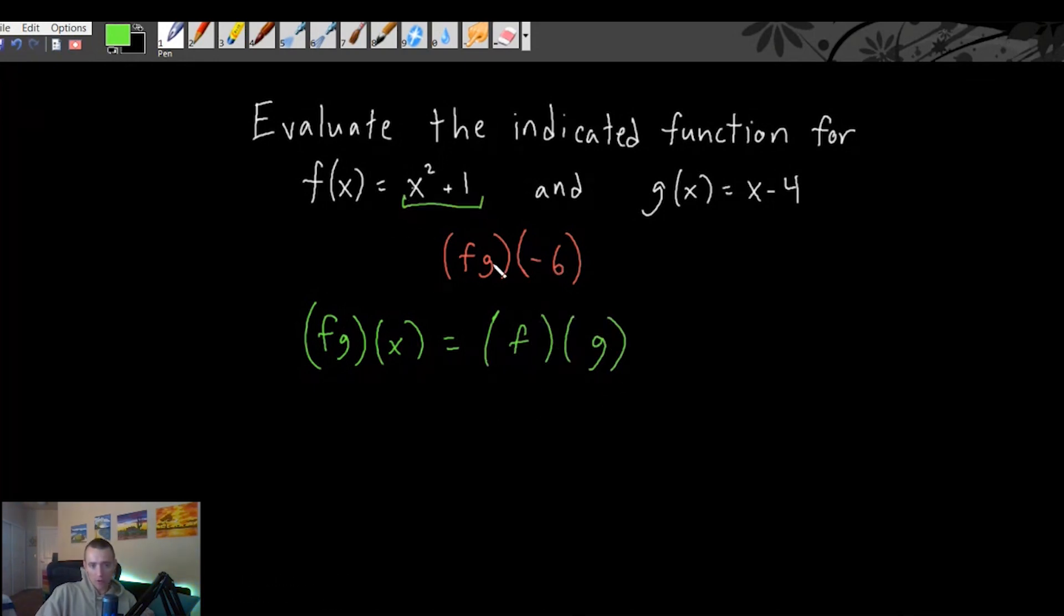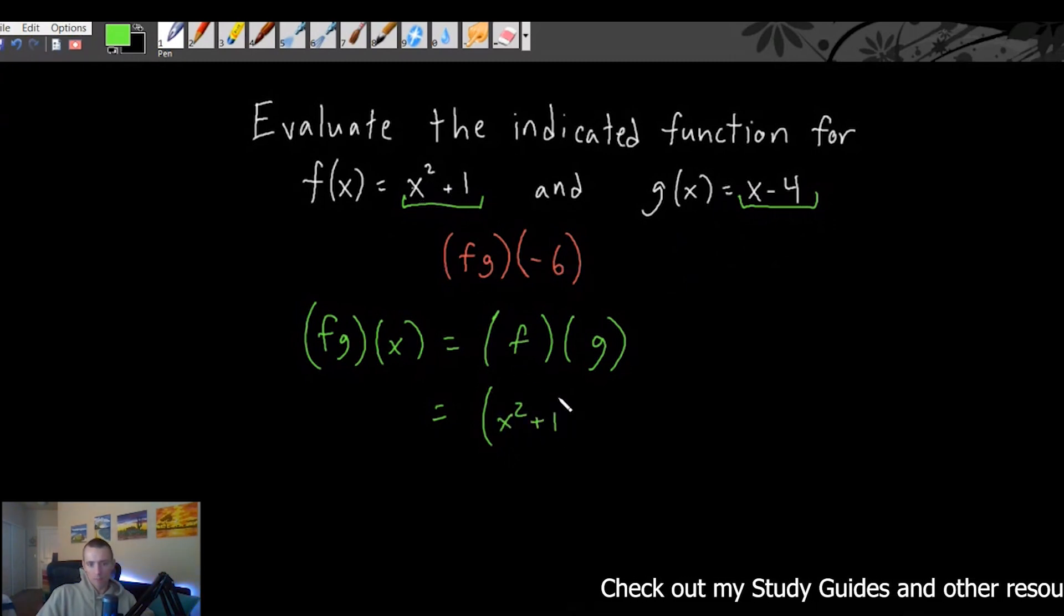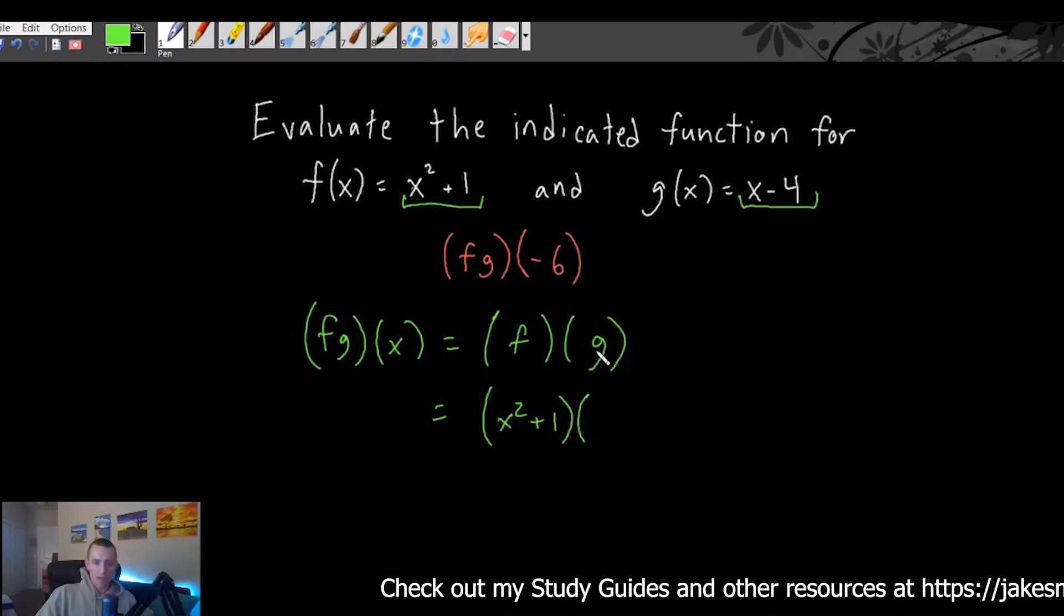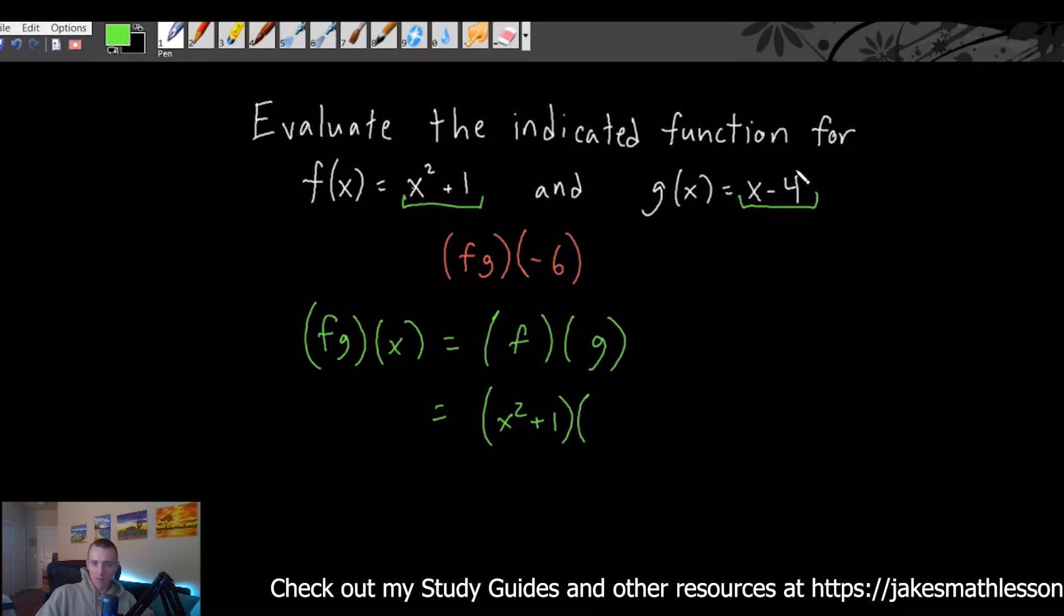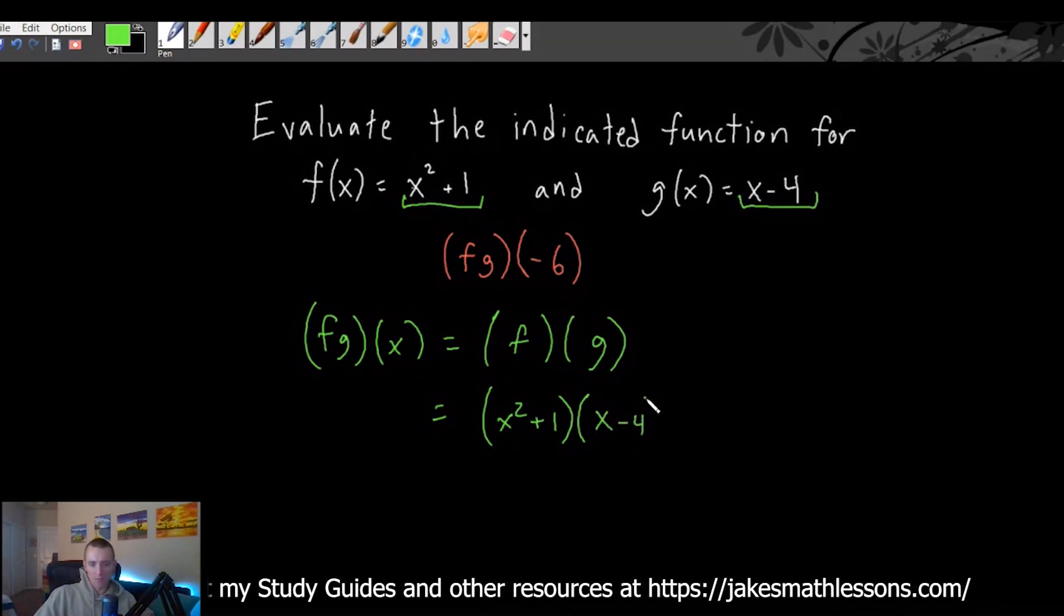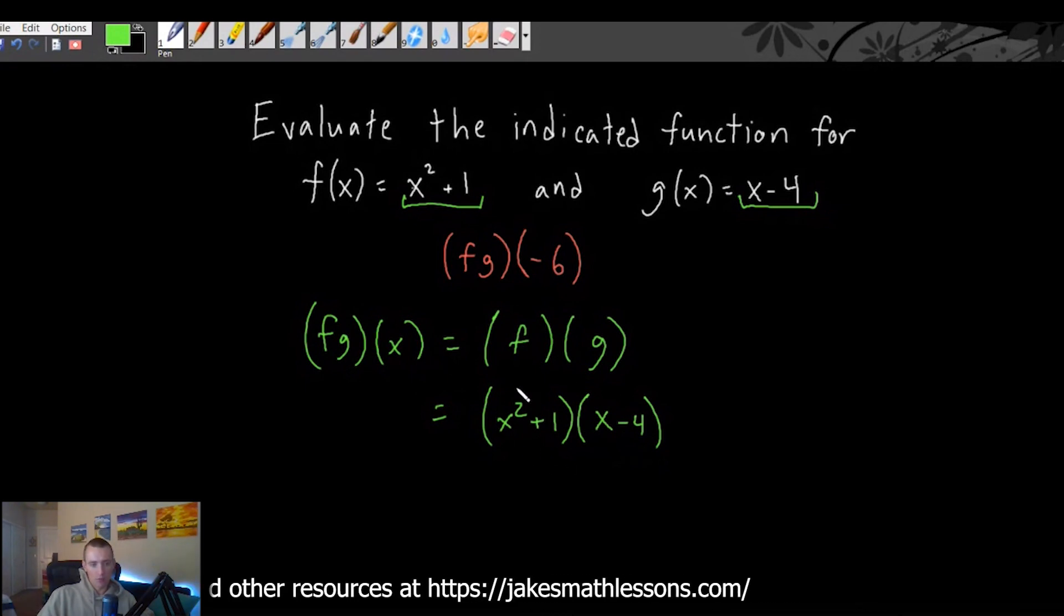So all we really should have to set up is f times g, which f is this whole part here, x squared plus 1, g is this whole part here, x minus 4. So we should be able to basically just say x squared plus 1 for f. Again, make sure that it goes in parentheses like this. And then times g is going to be times x minus 4 in parentheses. So f times g of x would be written like this, x squared plus 1 times x minus 4 with each of those in parentheses. And now we want to simplify.